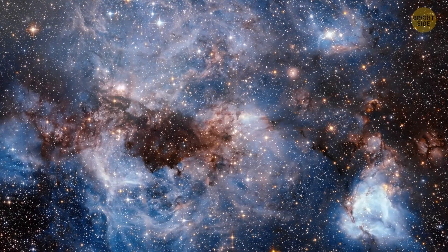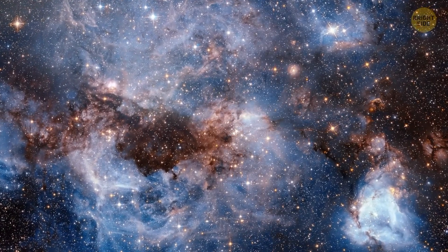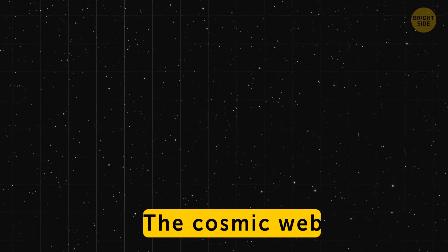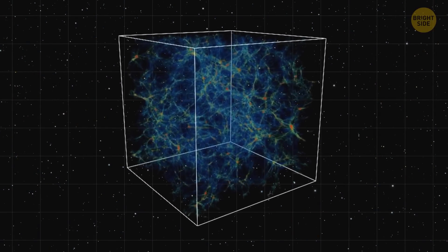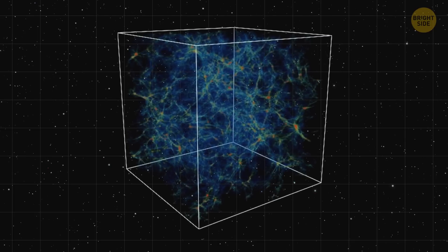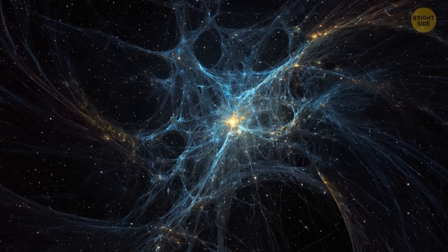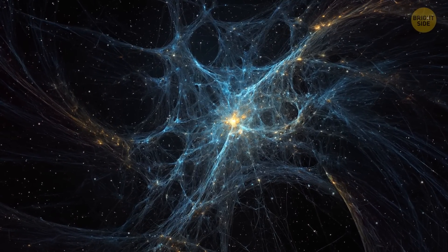Astronomers found the oldest strand of the cosmic web ever seen. The cosmic web is what we call a huge structure of the universe that's made of interconnected filaments of galaxies and dark matter. They're like a framework for galaxies and other structures, playing a crucial role in their formation.